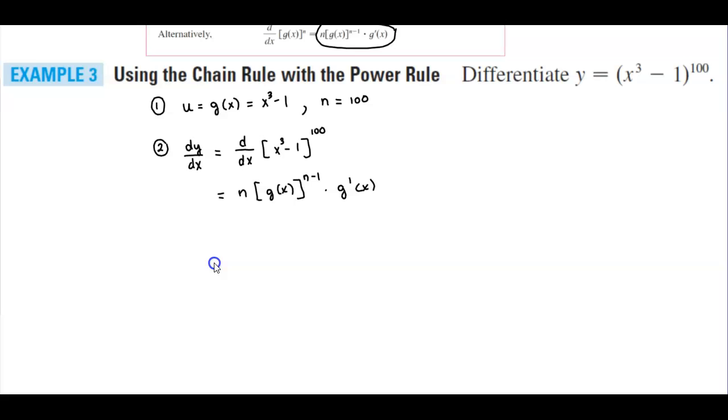So we need to find what is g prime of x. Well, here is g of x. So therefore, g prime of x is going to equal 3x squared.